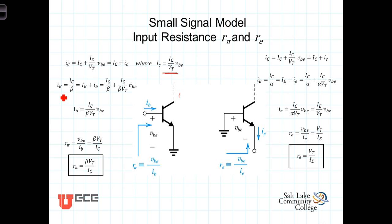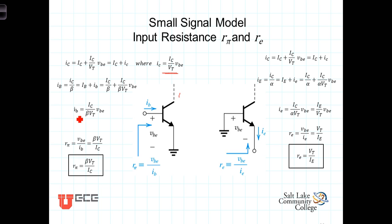The total base current is equal to the total collector current divided by beta. We should point out that we're assuming we're in the active region at this point, so that I sub C is equal to beta times I sub B. So I sub B, the total base current, is equal to the total collector current divided by beta. We are going to have a DC biasing component and then the small signal component. The small signal component, little i sub b, is equal to I sub C over beta V sub T times v_BE.